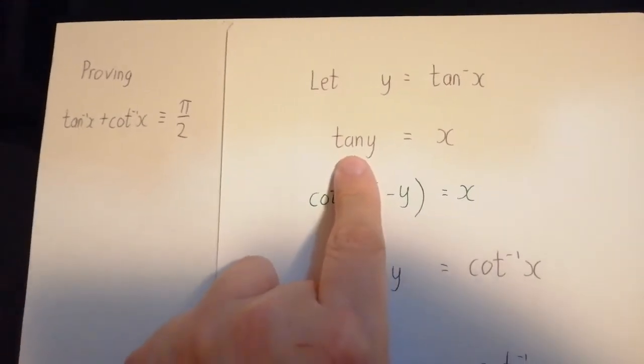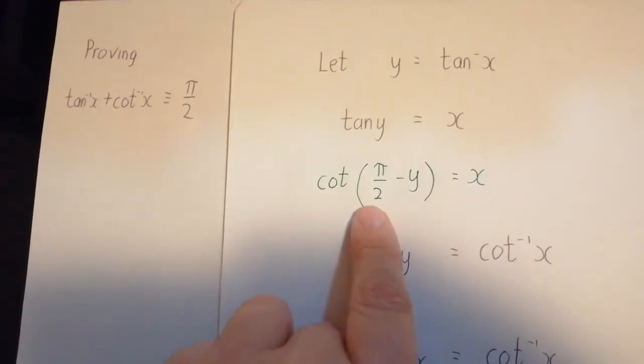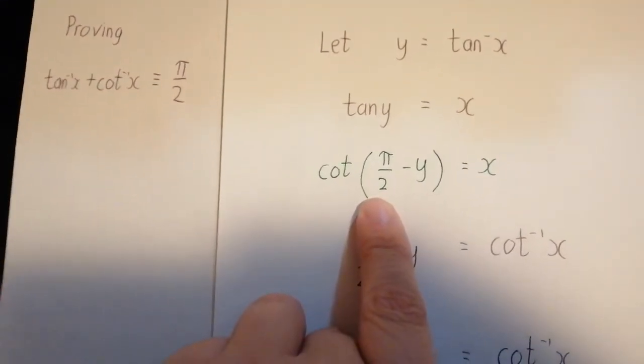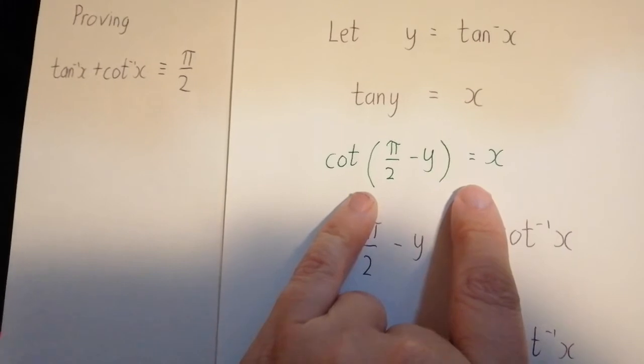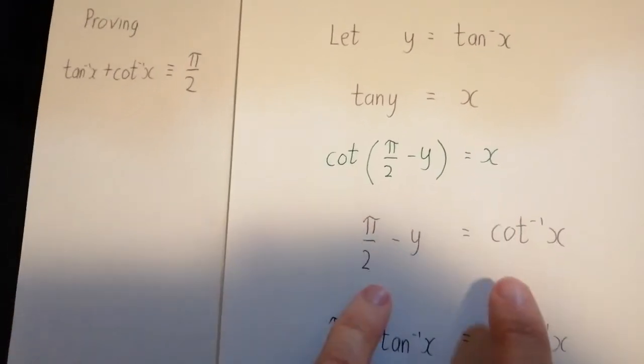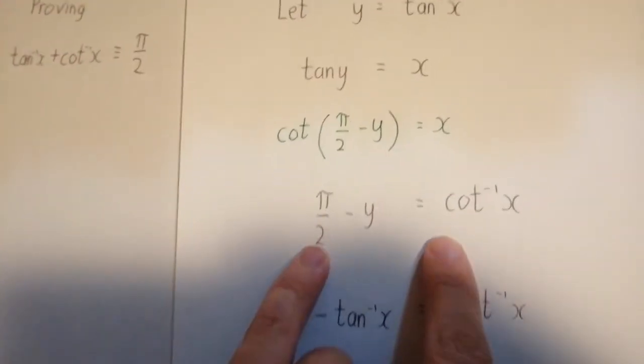You can replace the tan y with the translation of the cot graph. This gives you an easy step to arccot both sides there.